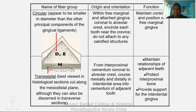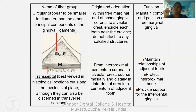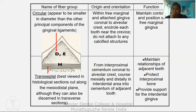The fourth principal group is the circular fibers. They appear smaller in diameter than other principal components. Origin: within the free marginal and attached gingiva, coronal to the alveolar crest — they encircle each tooth near the crevice and do not attach to any calcified structure. Function: maintain the contour and position of the free marginal gingiva.